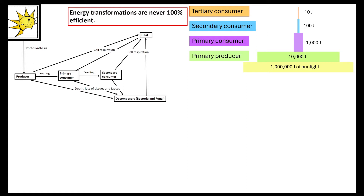When moving anything through the ecosystem, we have to think about the fact that energy transformations are never 100% efficient. Sunlight energy is absorbed by producers through photosynthesis, producing compounds available to the next trophic level. When the producer is fed on by the primary consumer, both organisms are respiring, losing thermal energy through that process.